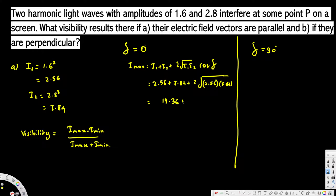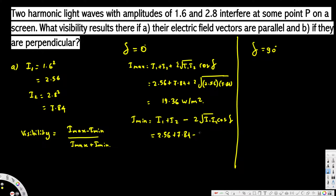To calculate Imin, it's the same equation but we subtract: Imin = I1 + I2 − 2√(I1·I2)·cos(δ). With δ = 0°, this becomes I1 + I2 − 2√(I1·I2). Plugging in: 2.56 + 7.84 − 2√(2.56 × 7.84) gives us Imin = 1.44 W/m².